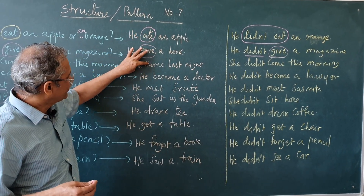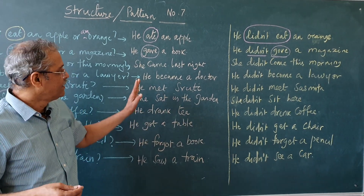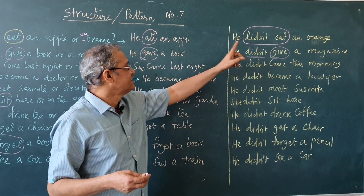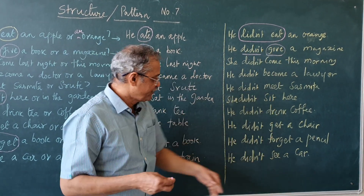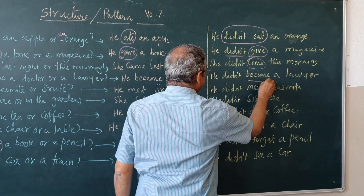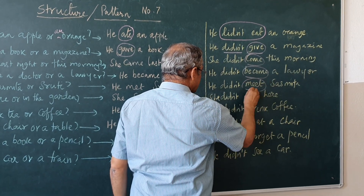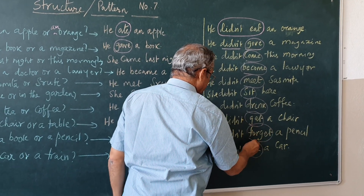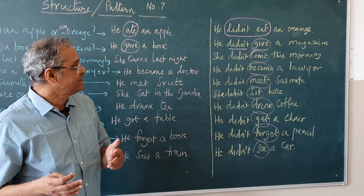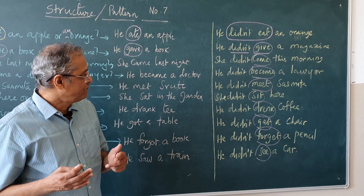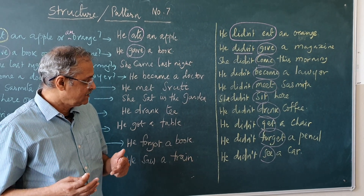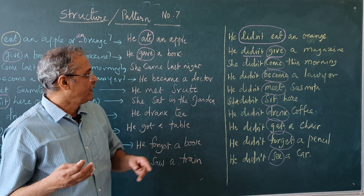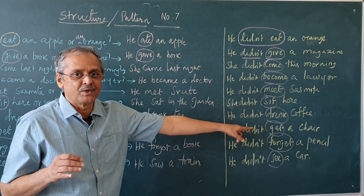Here you can put more past tense verbs, construct sentences, and then make the negative of that. Pay attention: when past tense comes with 'did not,' we put the present tense after that. So these are all present tense — didn't come, didn't give, didn't become, didn't meet, did not sit, didn't drink, didn't get, didn't forget, didn't see. Then automatically you will not commit mistakes. When you are using 'did not,' you will know that present tense should come there. So practice this.